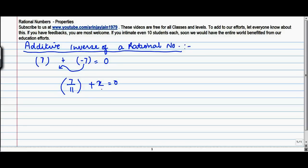To isolate x, what do we need to do here? We have 7 by 11. We subtract 7 by 11 from both sides.